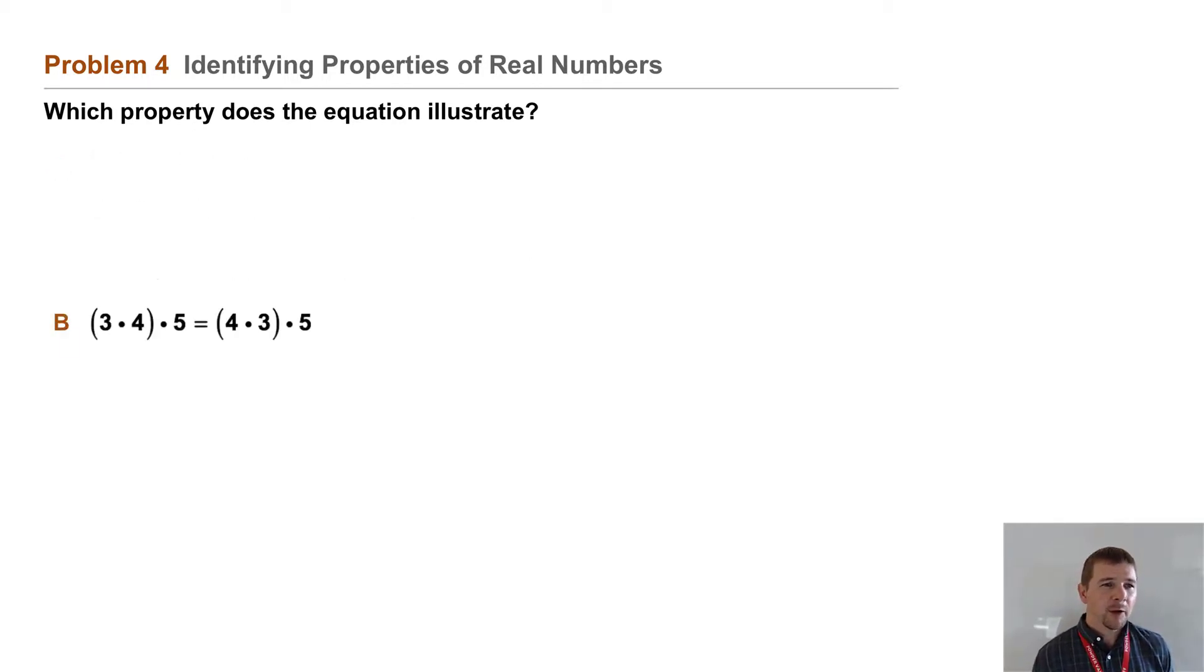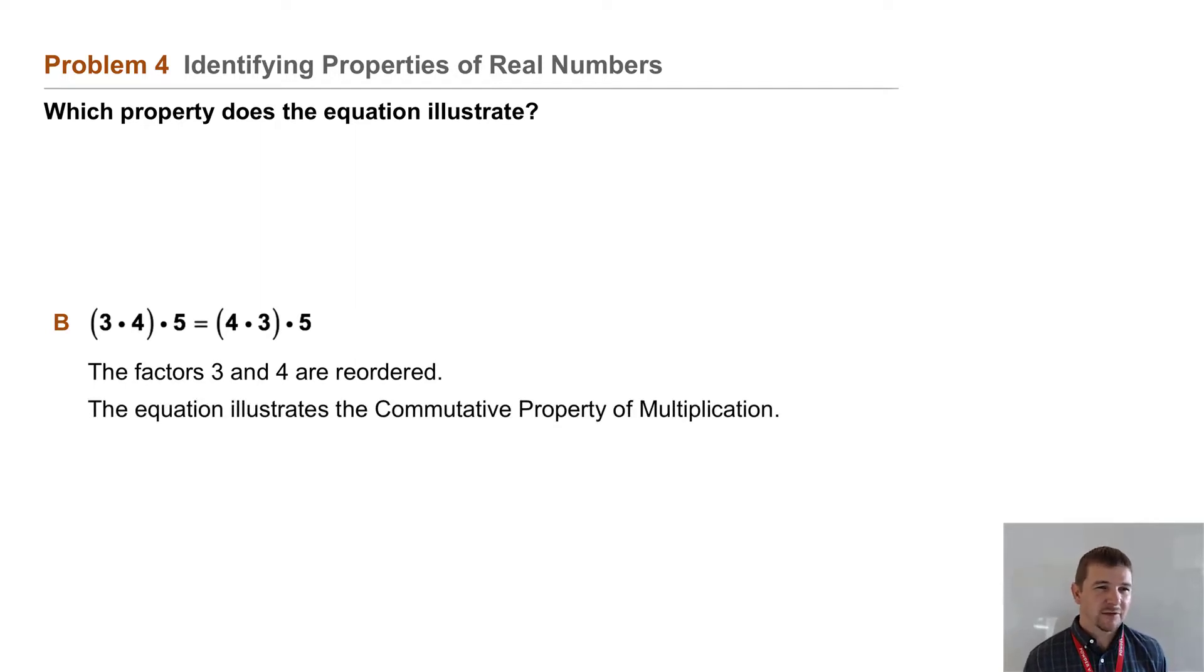Part b, what about the quantity three times four times five equals the quantity four times three times five. The factors three and four are reordered. So this equation illustrates the commutative property of multiplication.